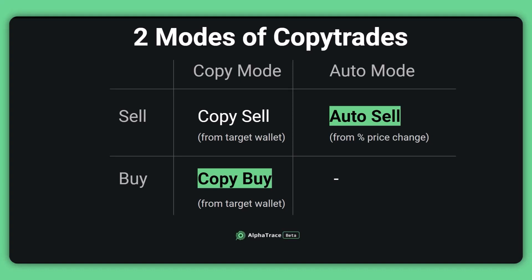You can select to copy trade like this smart trader on the same token at the exact same time — if they buy, the bot will buy; if they sell, the bot will sell too. Or you can set the bot to initiate the trade after the token price reaches a certain percentage change, for example setting the bot to sell the token when it reaches two times its value. To simply explain, we call them copy mode and auto mode. For selling, copy mode copies the sale when the target wallet starts selling. Auto mode lets the bot sell automatically once the token price reaches the percentage change you set.